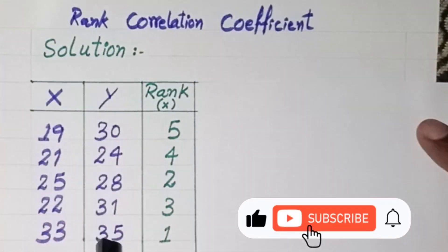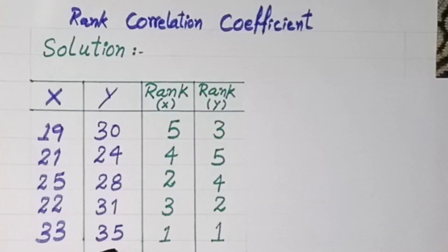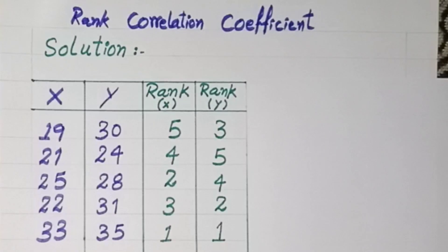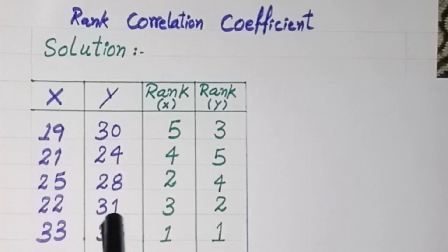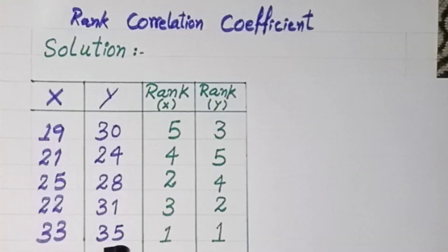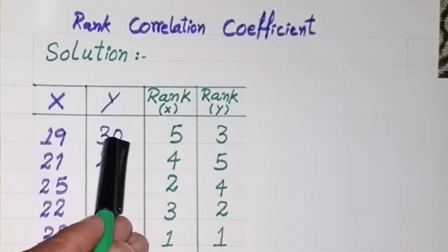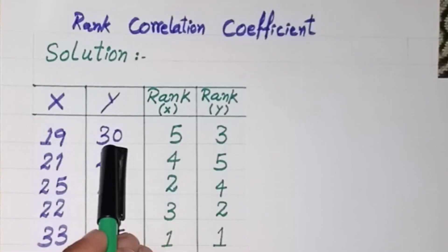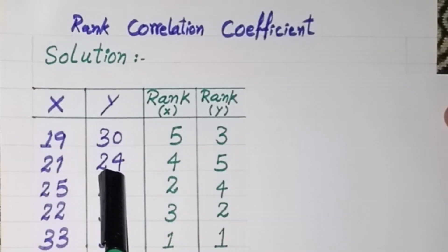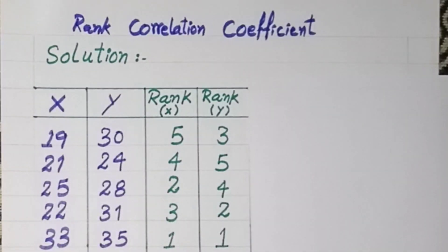In the same way, we rank all values of the y column. We rank the y values in descending order. The value 35 in the y column is the maximum, so we assign rank 1. The third maximum value of y is 30, so we assign rank 3. The value 24 is the smallest value of y, so we assign rank 5. In this way, we rank all x and y values.